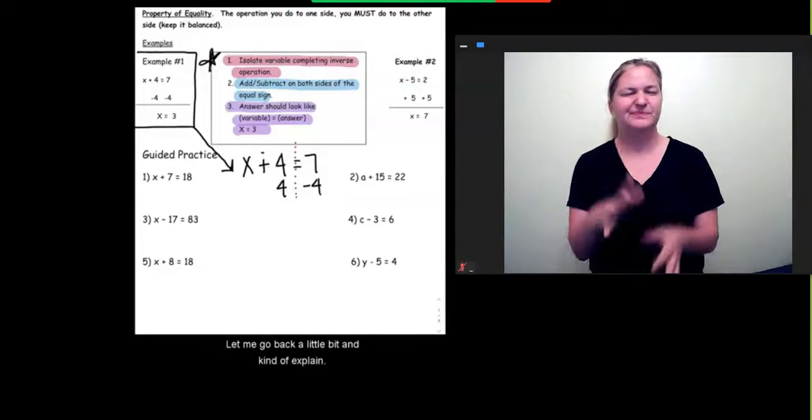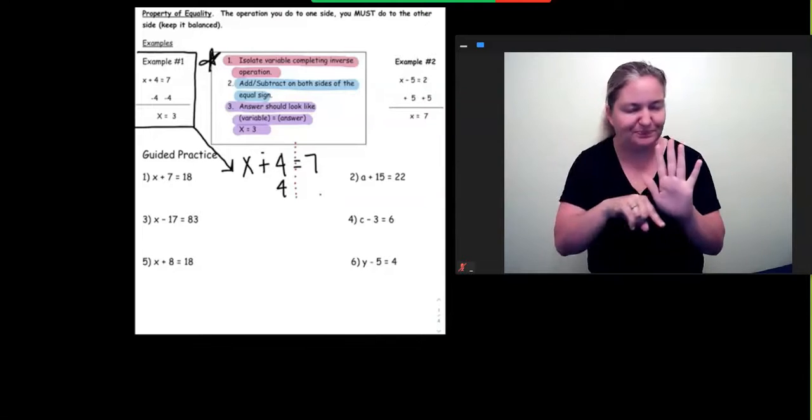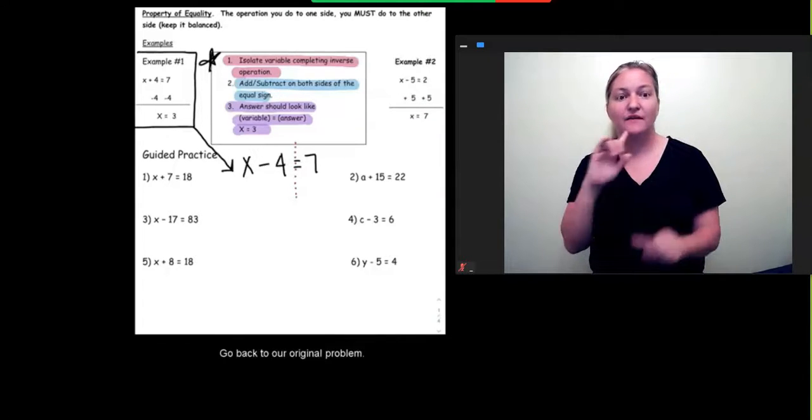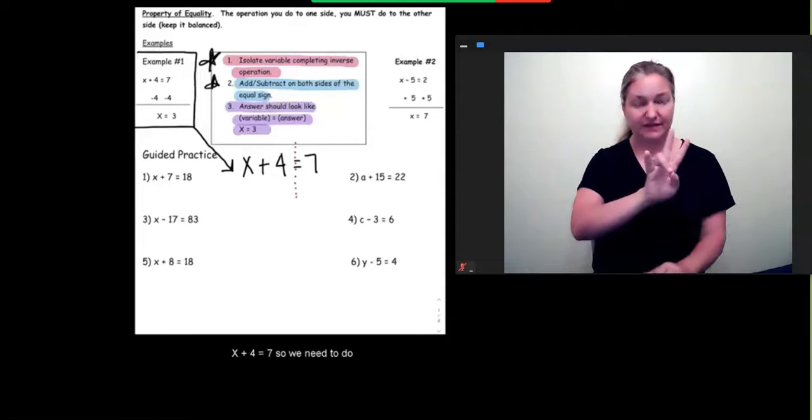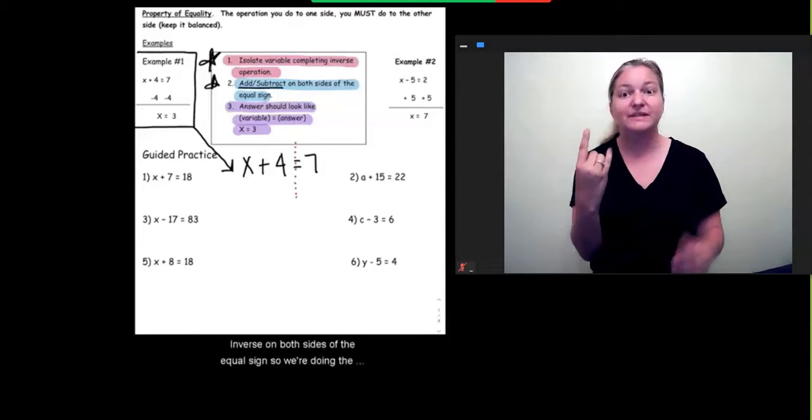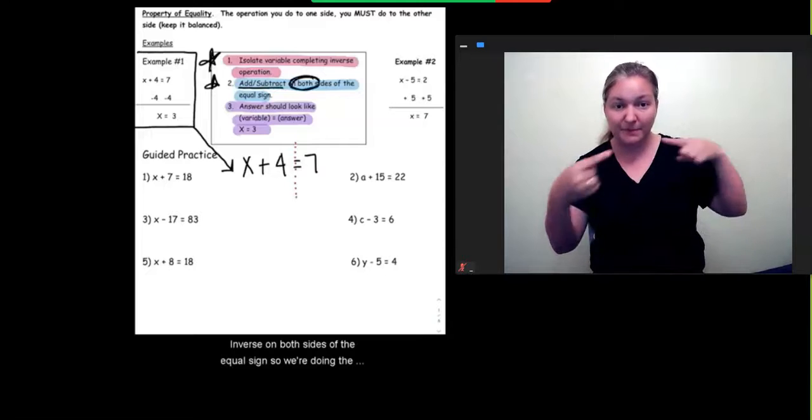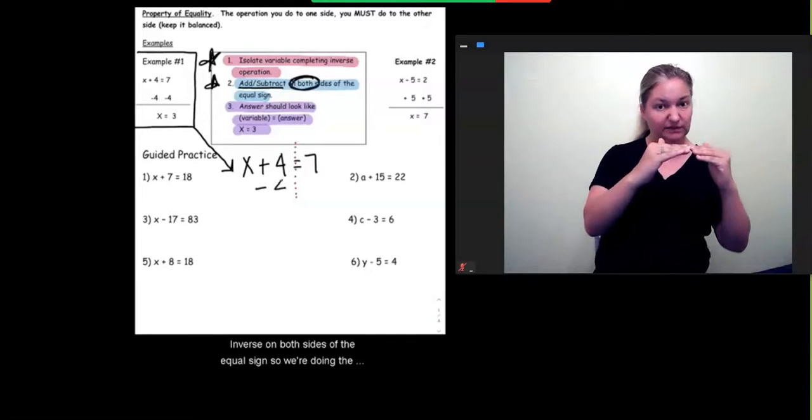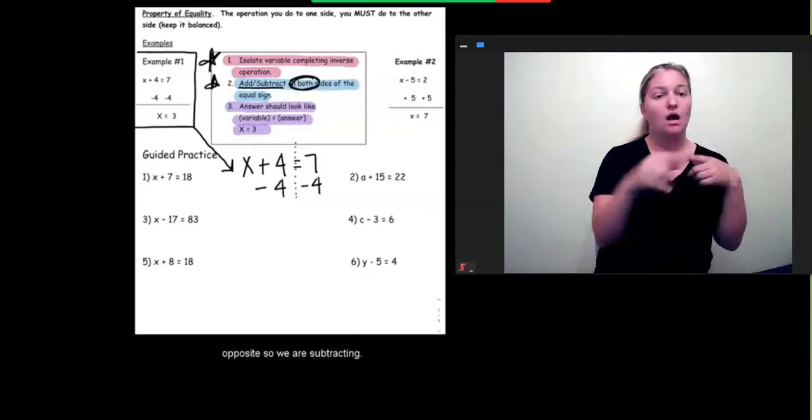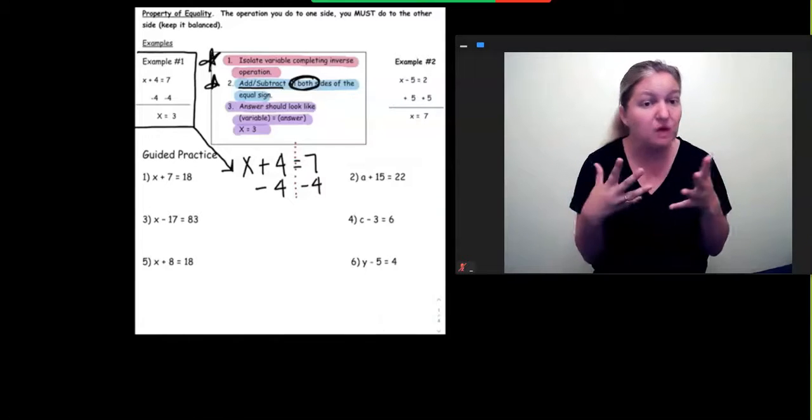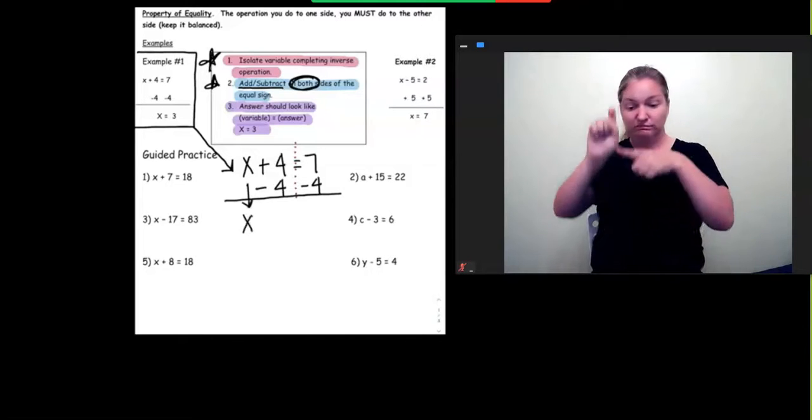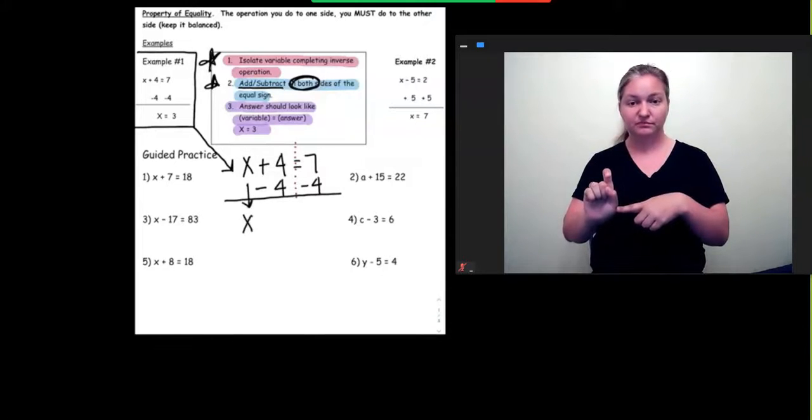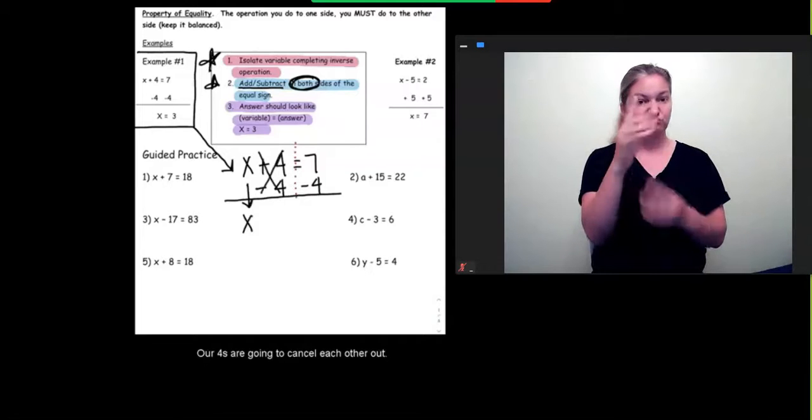And then we solve. But let me go back a little bit and kind of explain. Let's go back to our original problem, x plus 4 equals 7. So we need to do the inverse on both sides of the equal sign. So we're doing the opposite, so we are subtracting. So now, we bring down our x. Our 4s are going to cancel each other out.